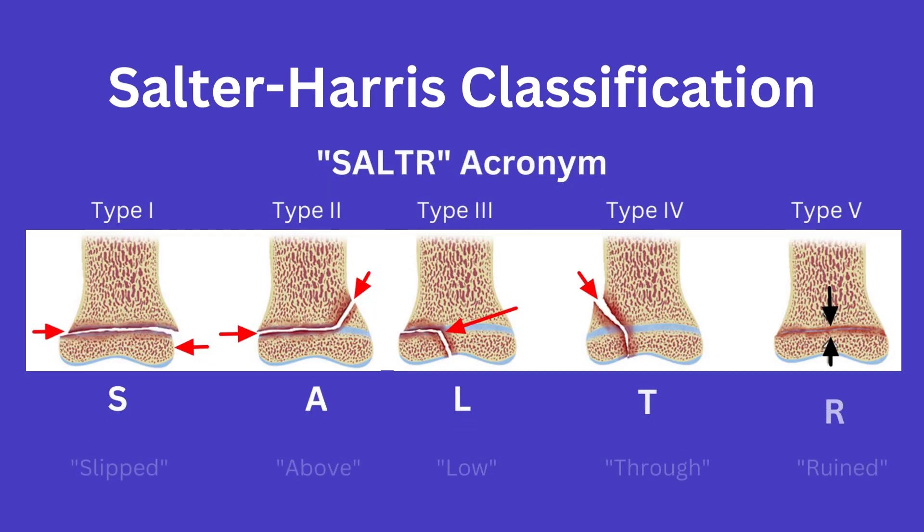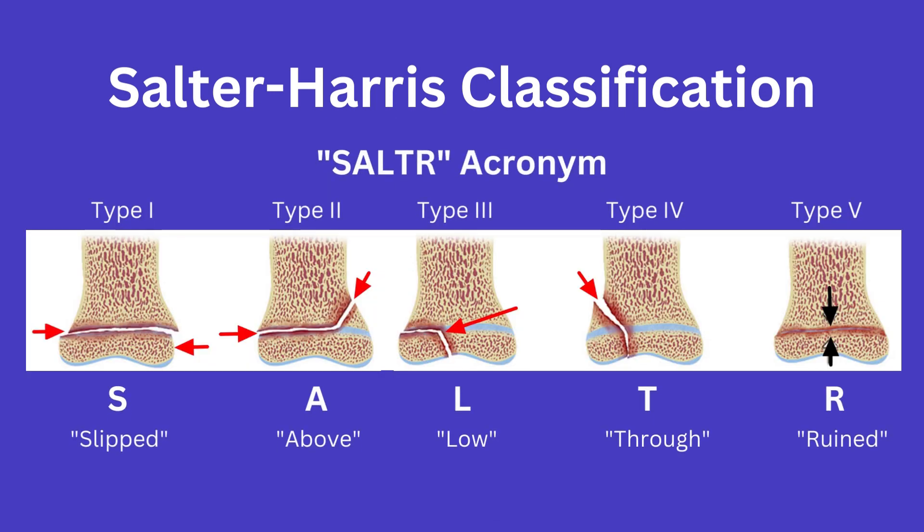So to start, there are five types. Beginning with type 1, this is the so-called slipped fracture. This involves a fracture directly through the hypertrophic zone of the epiphyseal plate, involves no cortex, and is the least worrisome of all of them.